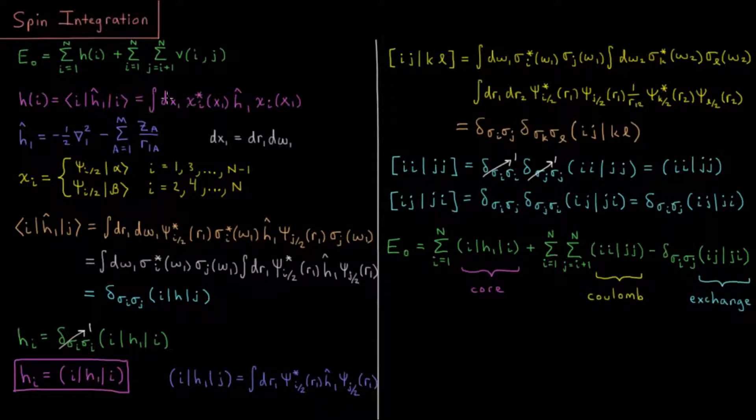Note that these variables that we're integrating over, the dx1, that's going to be dr1 d omega1, where r is the x, y, and z coordinates, the spatial coordinates, and omega is the spin coordinate, whether it is alpha or beta. And the dr1 would be dx1, dy1, dz1.